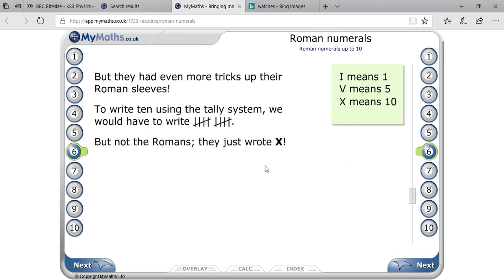To write 10, the tally system would be 1, 2, 3, 4 standing lines, 1 slant line for 5, and then again 1, 2, 3, 4 standing lines and slant line for 5. That means it will be 10. But Romans didn't acknowledge this tally system. They just wrote X for 10.